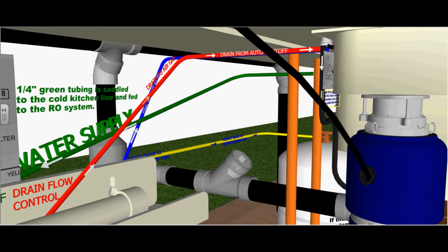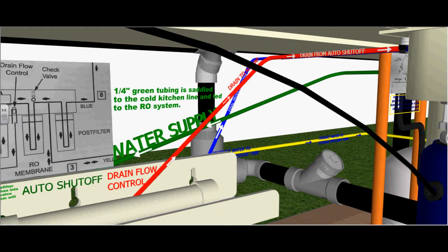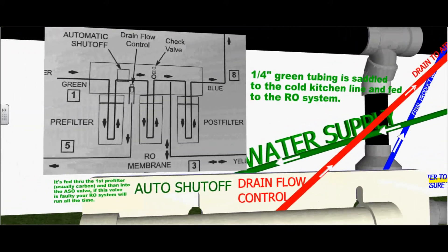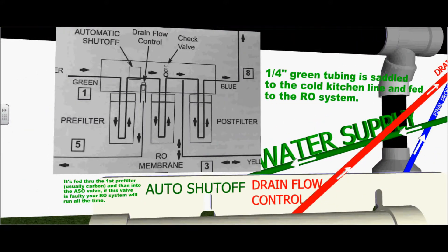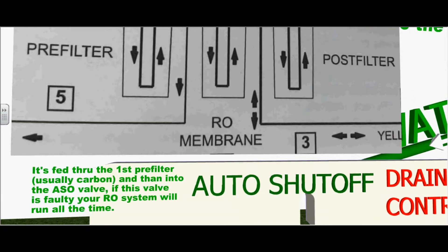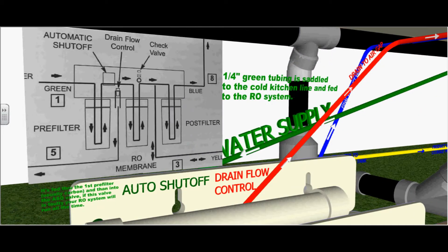Now let's follow the inch and quarter drain tubing which is saddled to the cold kitchen line and fed to the RO system. This is the water supply. It ties into the automatic shutoff, is fed through the first pre-filter, usually a carbon filter, and then into the ASO valve, the automatic shutoff valve. If this valve is faulty, your RO system will run all the time.